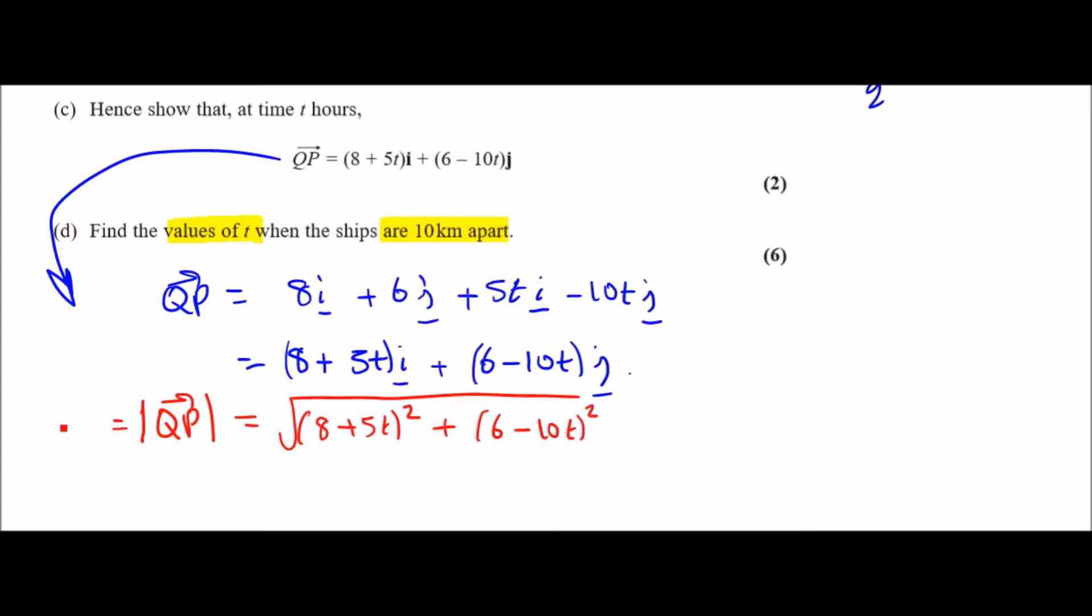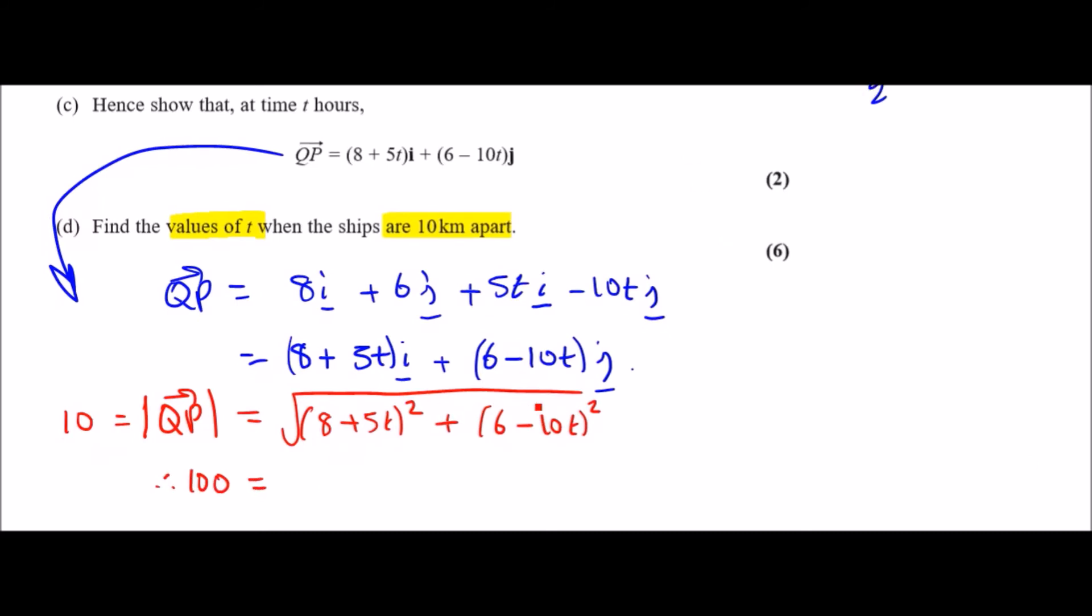To get rid of the square root, I'm going to square both sides, so this becomes 100 equals the expanded expression. Let's expand these double brackets: 8 times 8 is 64, 8 times 5t is 40t plus another 40t gives 80t, then 5t times 5t is 25t². For the second bracket: 36, 6 times -10 is -60 and another -60 is -120t, and -10 squared is plus 100t².